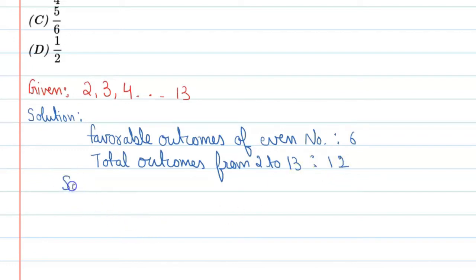So probability, which we're representing with P, of getting even number - what is the formula for probability? Favorable outcomes upon total outcomes. So it is 6 upon 12. If we cancel this, we get 1 upon 2.